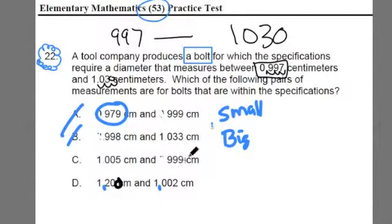Think of it as 999. It fits within one range. And 1,005 fits within the other range. Guess what? C is the bolt that's going to fit within our specifications. And we've just solved this problem.